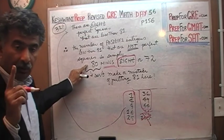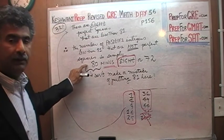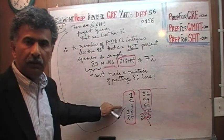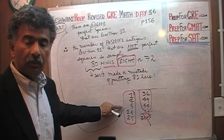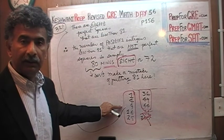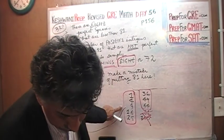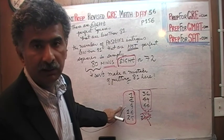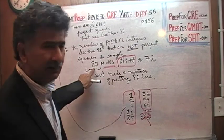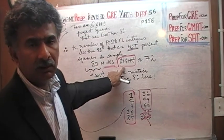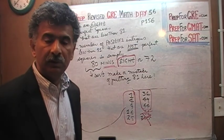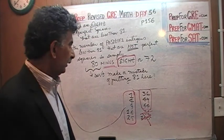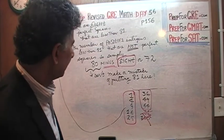There are 80 positive integers that are less than 81 — 80 altogether. Out of those 80, 8 happen to be perfect squares. Therefore there are 72 that are not perfect squares — that are not, as they put it, equal to the square of an integer. 80 minus 8 is 72.